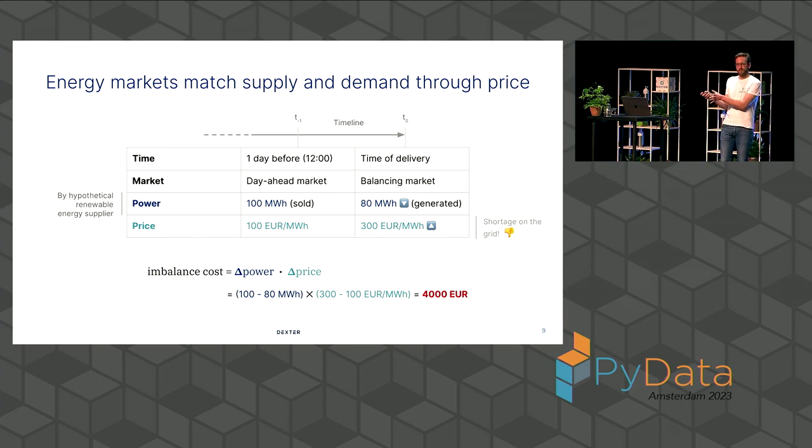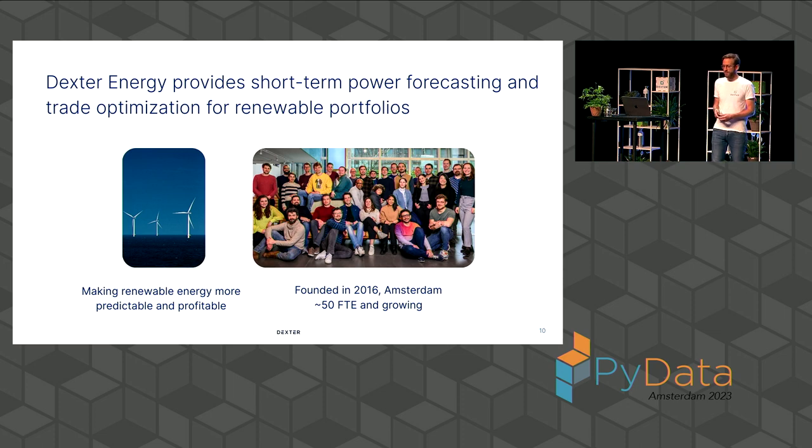And you can imagine that this is particularly a problem for the renewable energy supplier, because they have this unpredictable, hard-to-predict intermittent supply. And the money from sustainable energy sources is going to unsustainable sources. And this brings me to introducing Dexter Energy. So what we do is we provide short-term power forecasts and trade optimization for renewable portfolios. And therefore we make renewable energy more predictable, and therefore more profitable. We're a ScaleUp, we were founded in 2016, based in Amsterdam, and we have around 55 people working at Dexter, and we're growing fast.